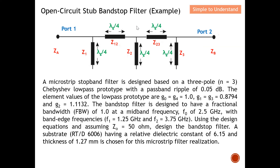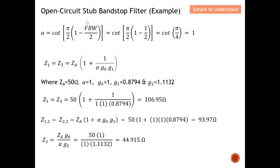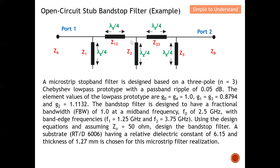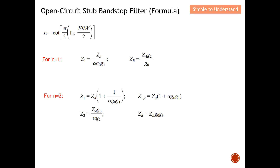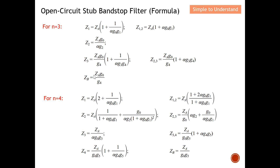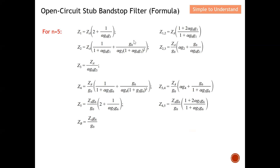Since the fractional bandwidth equals 1, I compute alpha equals 1 from the general formula. Because I'm designing n equals 3, I need the corresponding set of equations to compute the characteristic impedances of the open circuit stubs and the connecting line. I've simplified the calculation — with alpha equals 1, I'm ready to proceed.